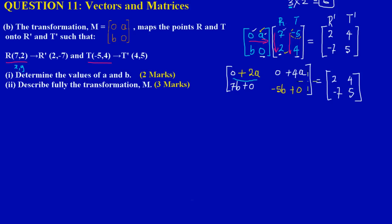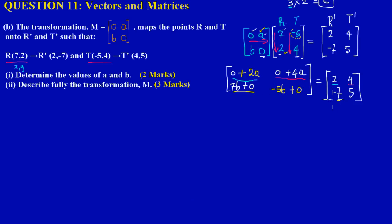Matching corresponding positions: top-left gives 0 + 2a = 2; top-right gives 0 + 4a = 4; bottom-left gives 7B + 0 = -7; bottom-right gives -5B + 0 = 5.